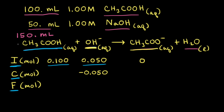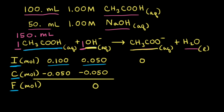Looking at the balanced equation, the mole ratio of acetic acid to hydroxide anion is one to one. Therefore, if we are losing 0.050 moles of hydroxide anions, we're also losing 0.050 moles of acetic acid. So when the reaction goes to completion, all of the hydroxide anions have been used up — we have zero moles of hydroxide anions left over. For acetic acid, if we started with 0.100 and we're losing 0.050, we're left with 0.050 moles when the reaction goes to completion.